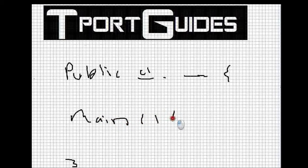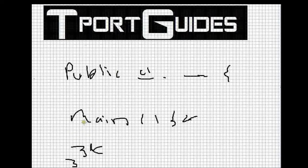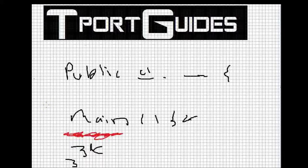Local variables are declared after the start of your main method and before the end of your main method — basically inside your main method or other methods within your class. A disadvantage to this is that none of the other methods within your class can actually access this declared variable.